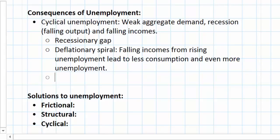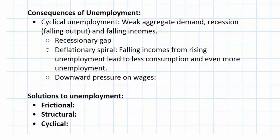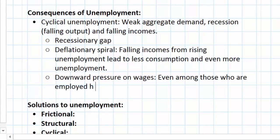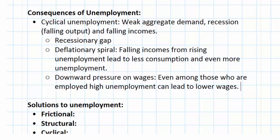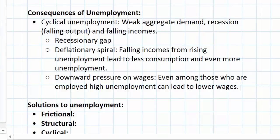Another consequence of high cyclical unemployment is downward pressure on wages. Falling wages apply not only to those who are out of work but to those who are in work as well. There is excess supply of labor in the labor market, and the only way to relieve this surplus is for the wage rate to fall. For those who still have jobs, when their contracts are renegotiated employers are able to lower their wages, or for those who refuse to accept lower wages, the threat of losing their jobs becomes real.